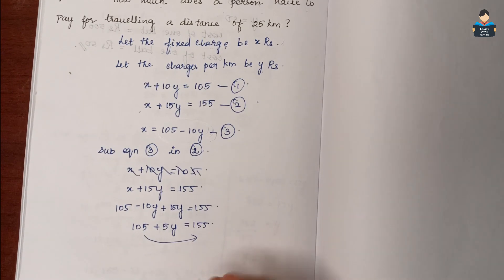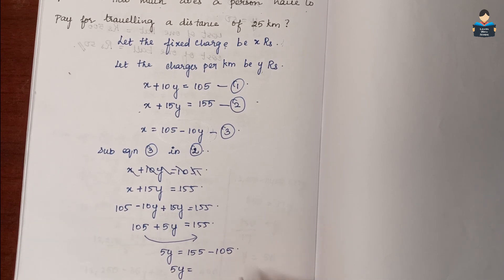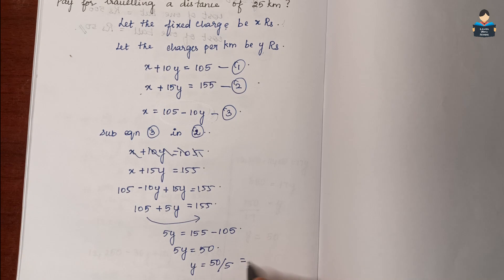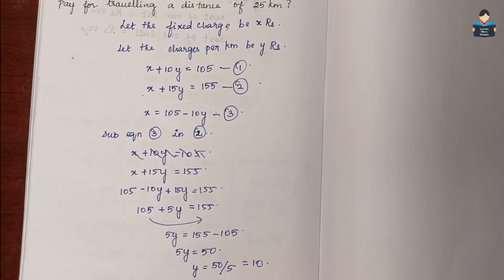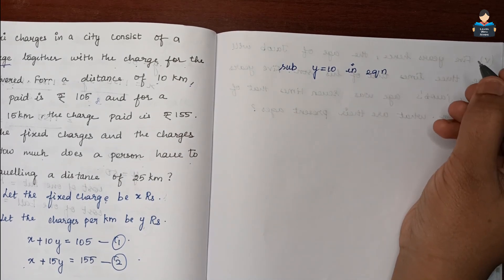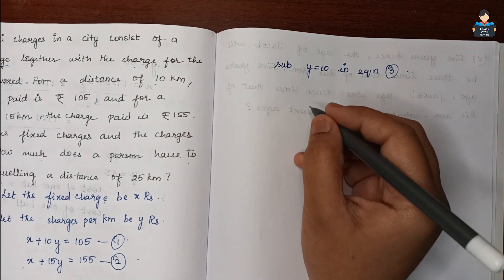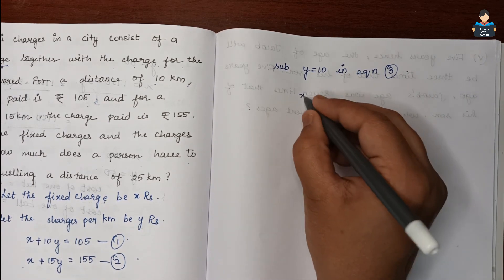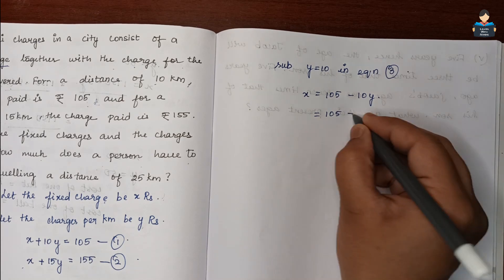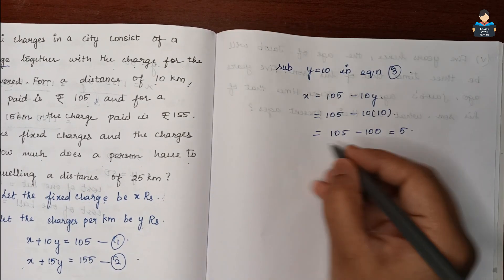So 5y = 155 − 105 = 50, therefore y = 50/5 = 10. So y equals 10. Now substitute y = 10 into equation 3: x = 105 − 10 × 10 = 105 − 100 = 5. So x = 5.